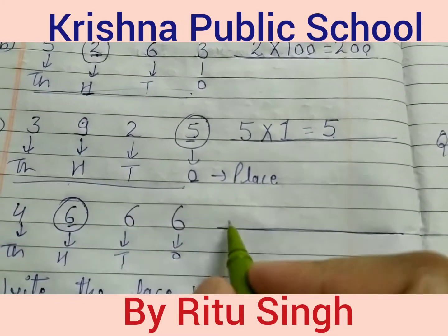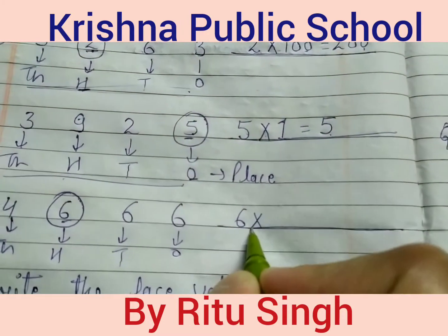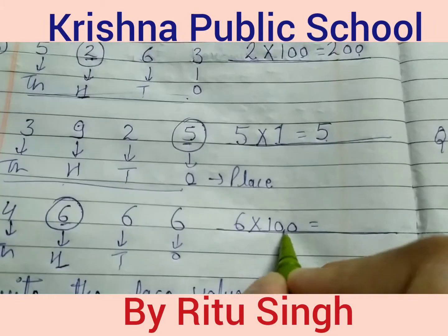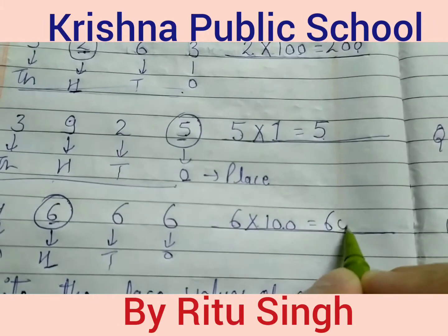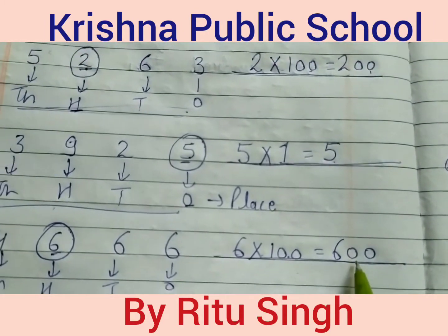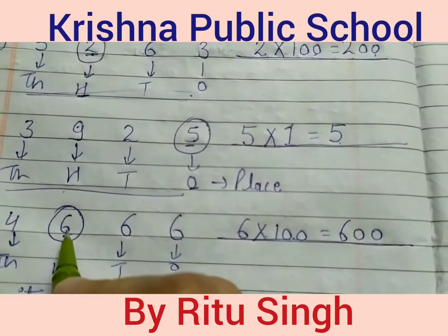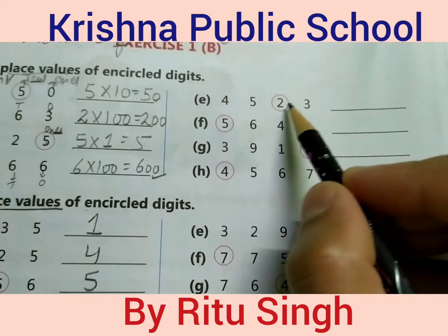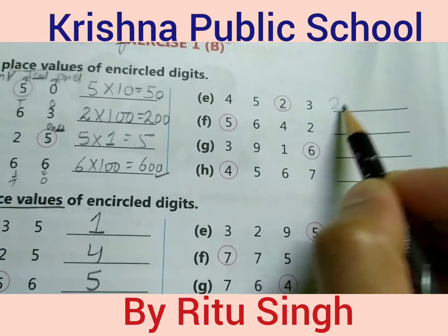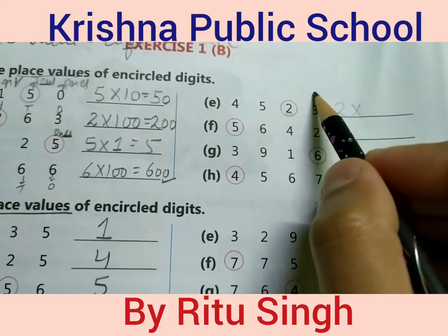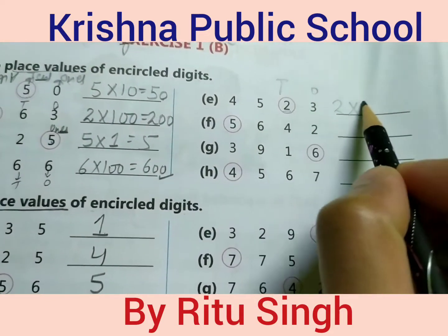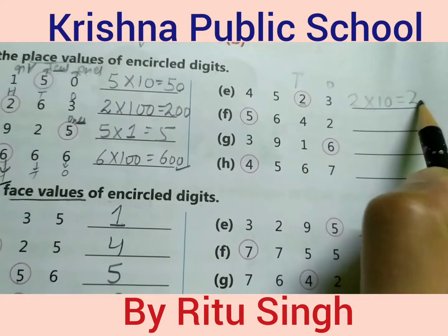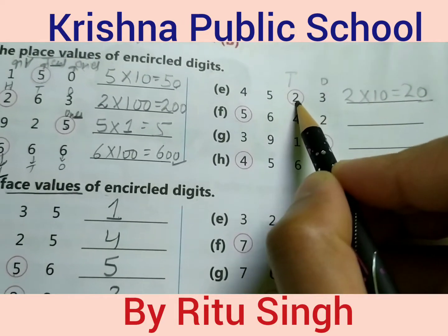Write the digit 6 into its place — the place is hundreds. Write 100. 6 into 100 equals 600. This is the place value of digit 6. Similarly, write the digit 2 into its place — the place is tens. Write 10. 2 into 10 equals 20. This is the place value of digit 2.